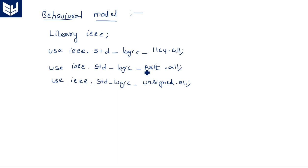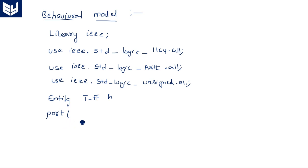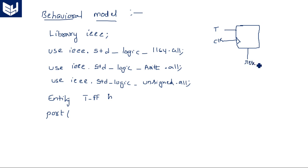Next is the entity declaration: entity t_flip_flop is. The entity is where we specify the inputs and outputs. For the T flip-flop we have input T along with a clock signal. Instead of preset and clear, I am taking a reset pin. The output is Q and Q_bar.